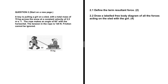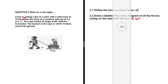We need to draw a labeled free body diagram for all the forces acting on the sled with the girl. A boy is pulling a girl on a sled with a total mass of 70 kilograms across the snow at a constant velocity of 2.5 meters per second. The rope makes an angle of 60 degrees with the horizontal, the tension in the rope is 120 newtons, and friction cannot be ignored.